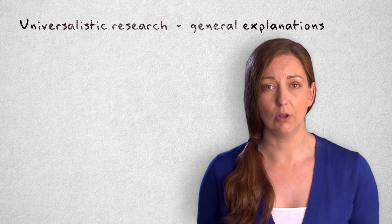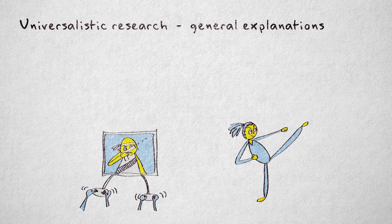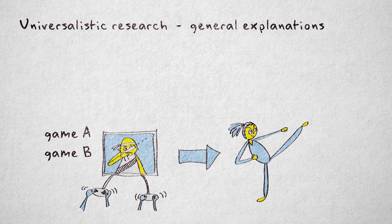Universalistic research tries to provide explanations that apply generally. For example, we could hypothesize that playing violent computer games leads to aggressive behavior. The specific game, or the type of person playing it, is not relevant here, because we assume the relation between violent gameplay and aggression holds for any violent game, be it GTA, Call of Duty, or any other game.